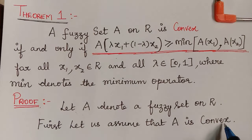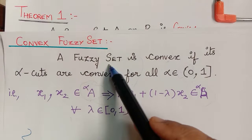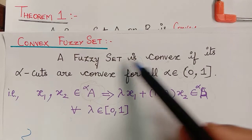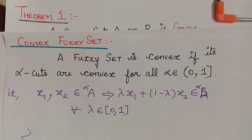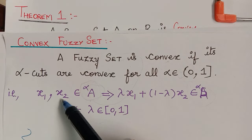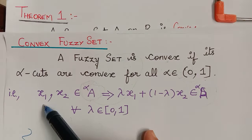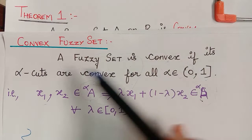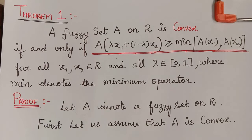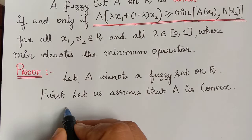By the definition of convex, we saw in our previous video that a fuzzy set is convex if all of its alpha cuts are convex. As per the definition of a convex set, if x1 comma x2 is an element of the alpha cut set then lambda x1 plus 1 minus lambda x2 will also be an element of that alpha cut set. So a fuzzy set will be convex only if its alpha level cuts are always convex.